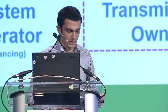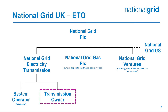The part that I work in is called the transmission owner. You've got two parts: the system operator and the transmission owner. The system operator are the guys who sit in the control room — they've got a wall of screens, and they can see the generation happening around the country, where the demand is going, the electrical flows across the network. It's their responsibility to ensure that demand matches supply.